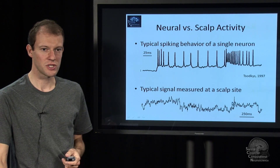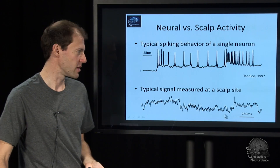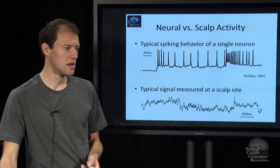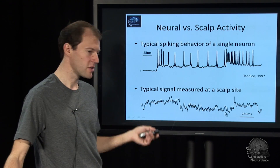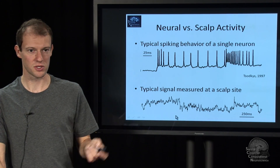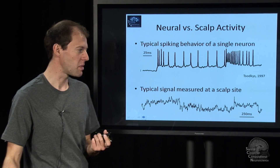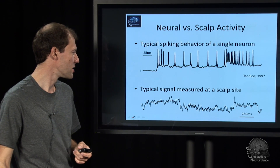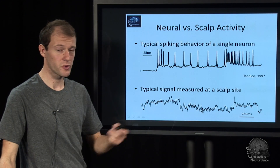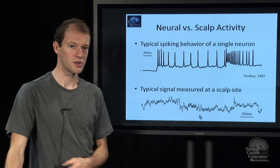The EEG is, of course, an average of millions of firing processes, so you never see individual spikes. But you may see something in higher frequencies, like 100 Hz, that is stronger when you have more spiking behavior. All the lower frequency things, like 10 Hz or 20 Hz, are all synchronized oscillations.